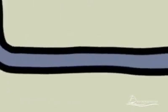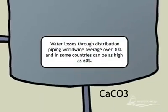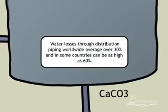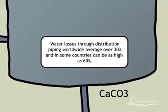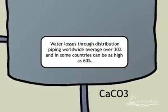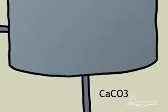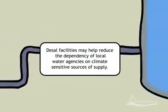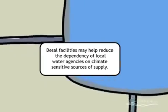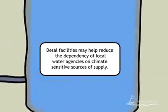The potable water is further treated by adding calcium carbonate to improve the taste and bring the pH to the neutral range. Chlorine is also injected to provide disinfection properties as the water travels from the reverse osmosis plant through the distribution pipes to homes and businesses.